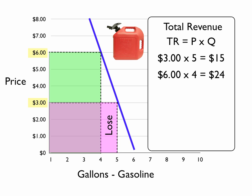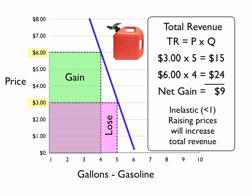We would lose this area here by increasing the price, but we would be gaining this area. Note that the gain is larger than the loss area — our net gain in this case would be nine dollars. For products or services that have an elasticity coefficient of less than one, they're considered inelastic, and for inelastic products, when we raise prices that will actually increase our total revenue.